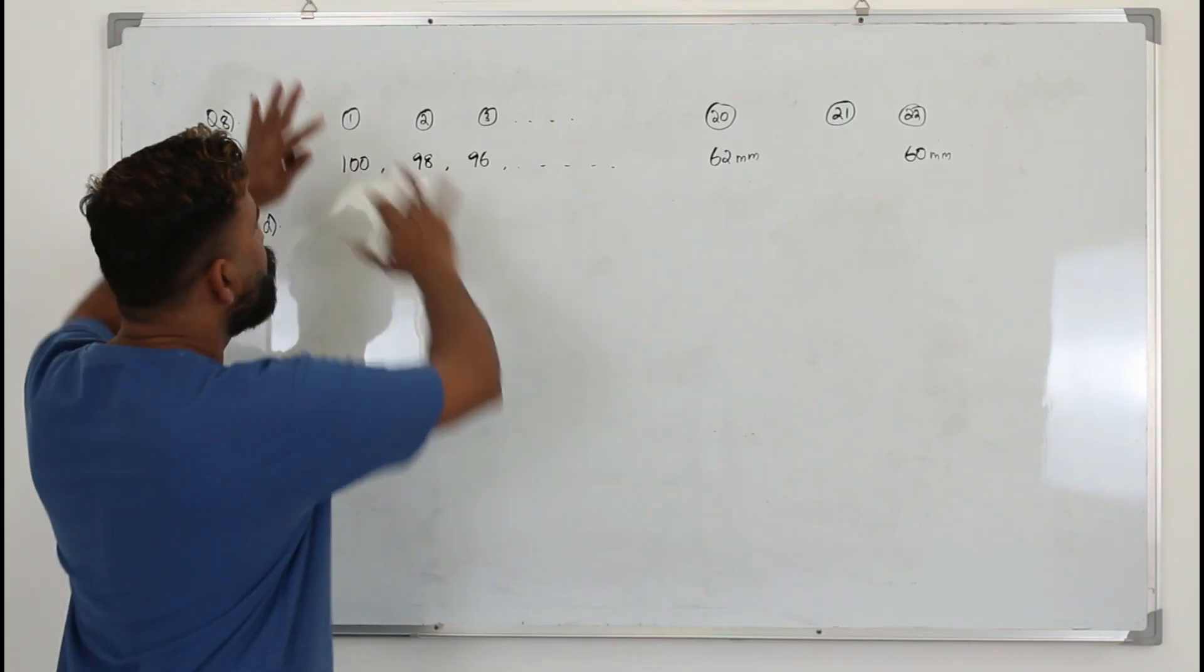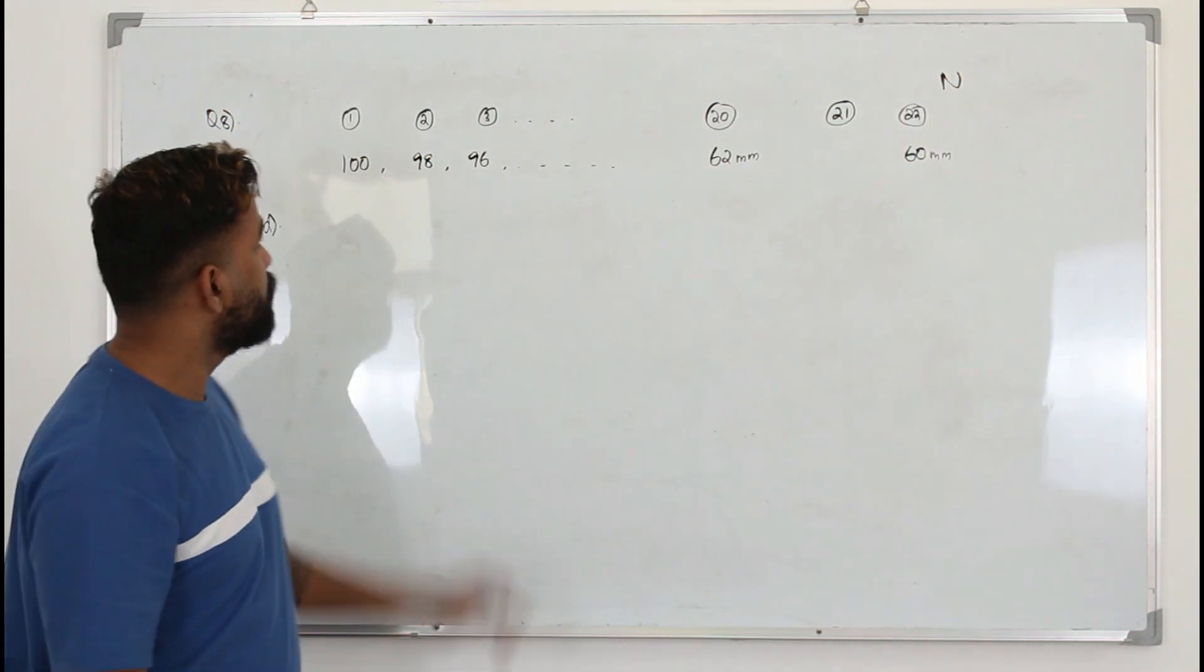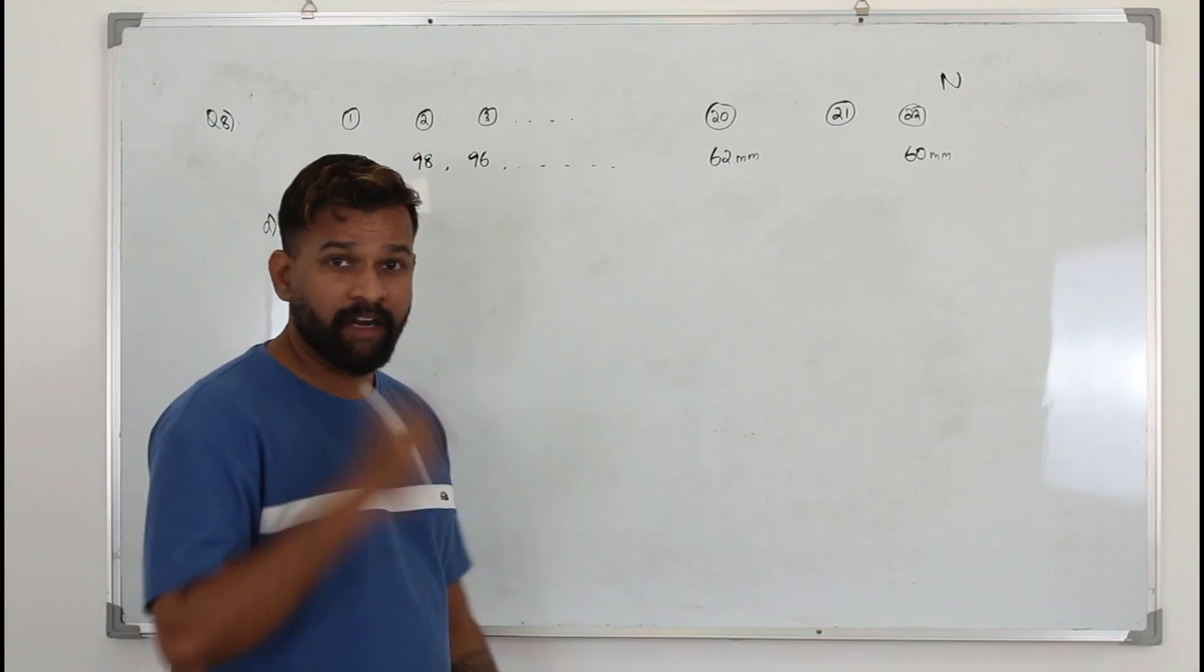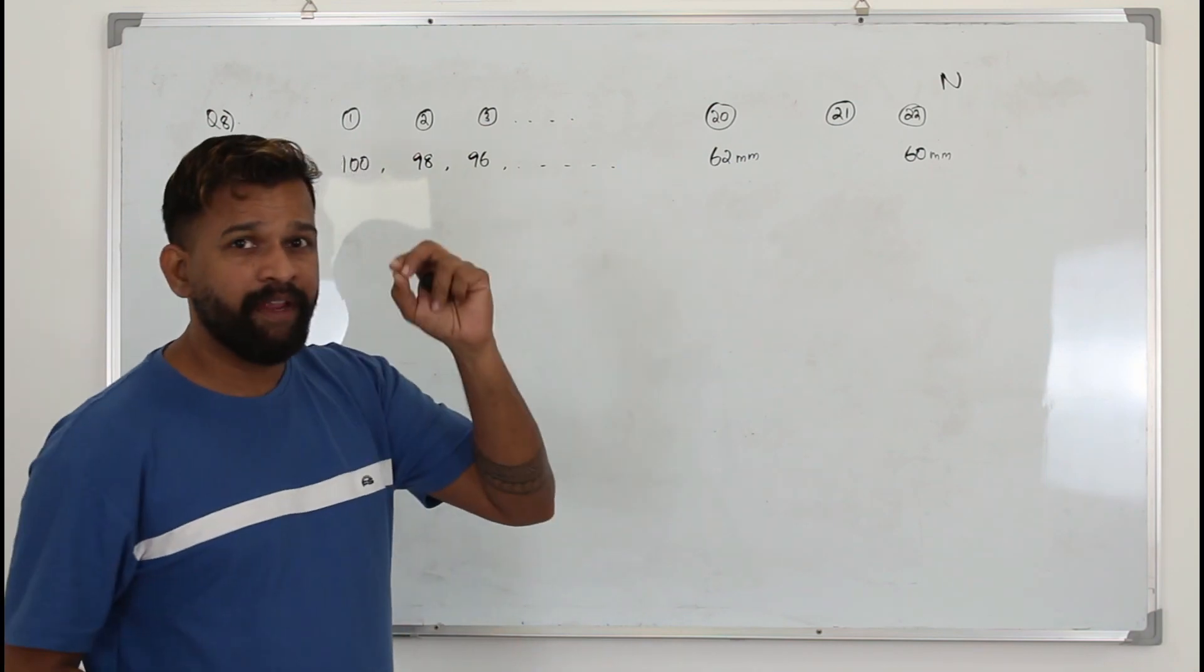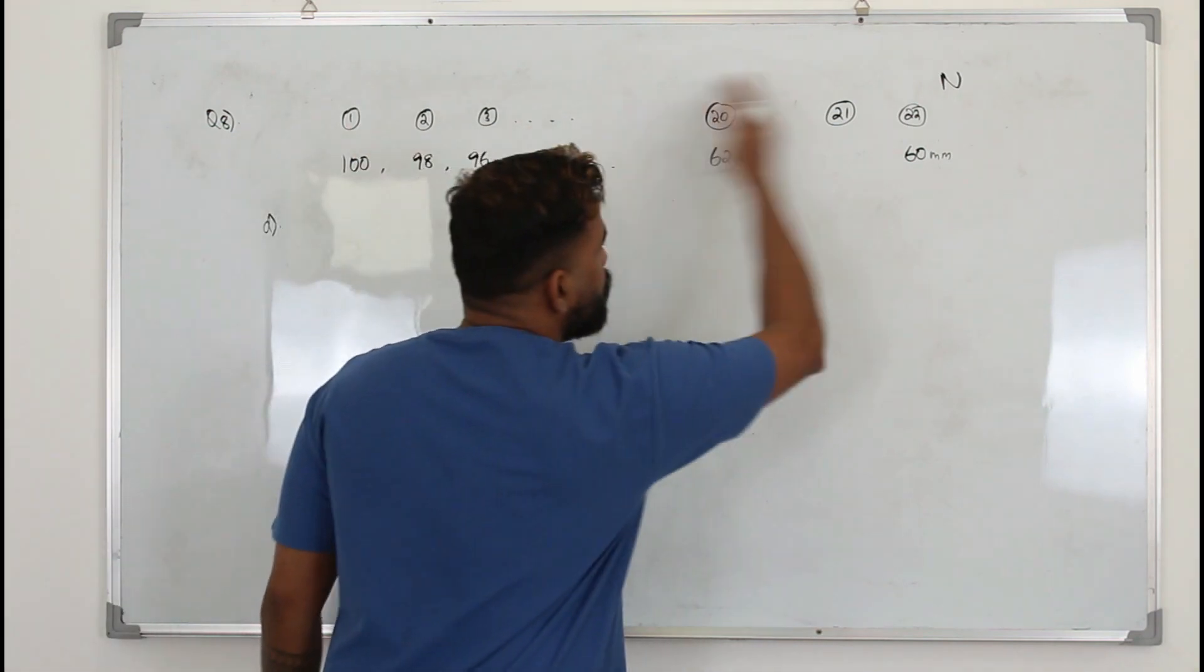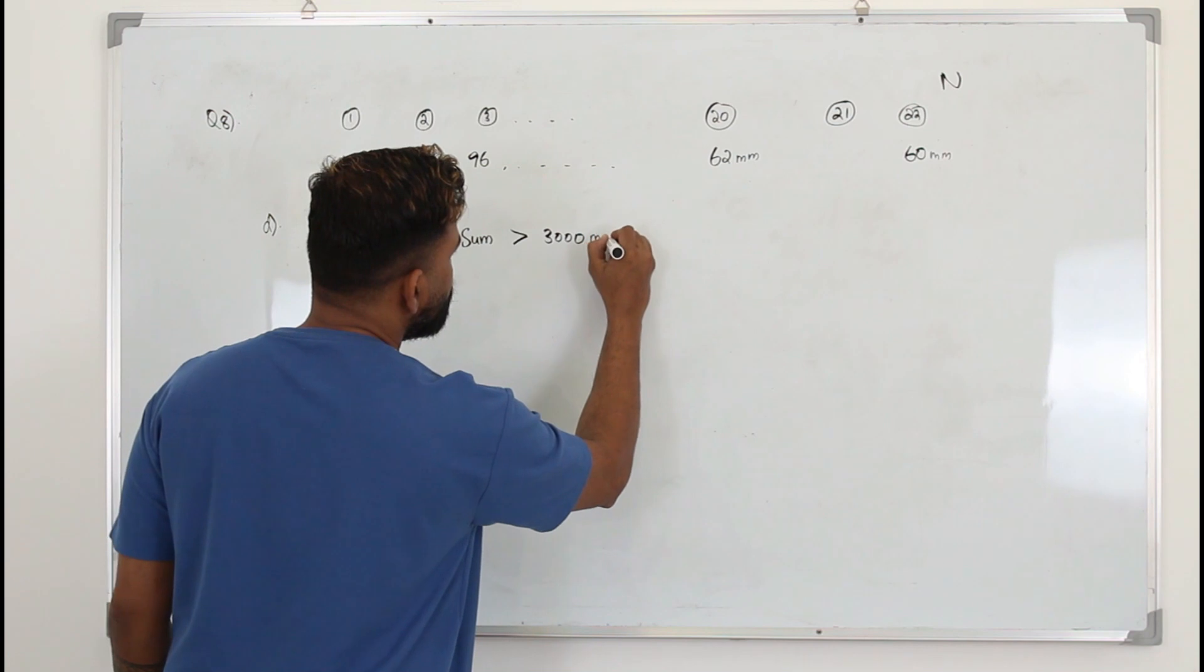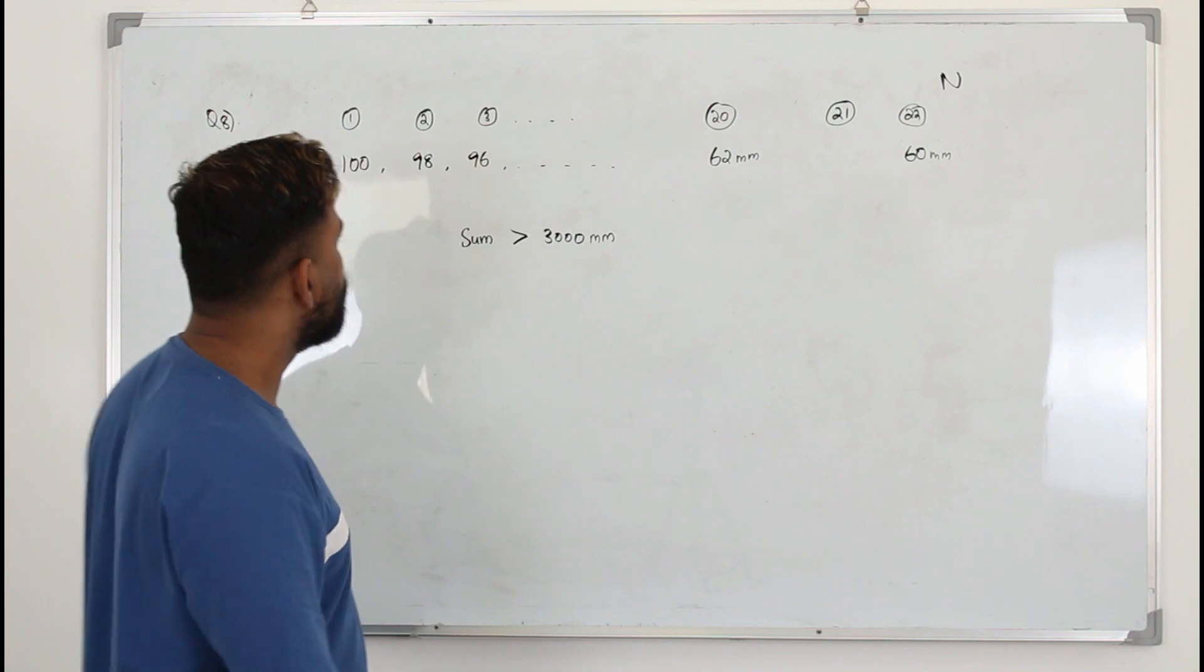In part D it says after total number of n hits, from the beginning, the post is driven more than 3 meters into the ground. You need to read the question carefully and look at these units. They say 3 meters, so in millimeters it's 3000 mm. Basically the total sum is greater than 3000 mm. They want you to find the smallest possible value of n.